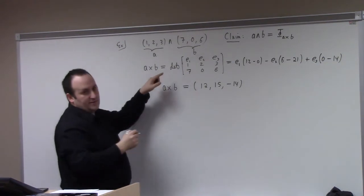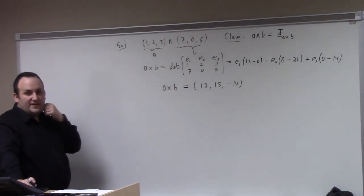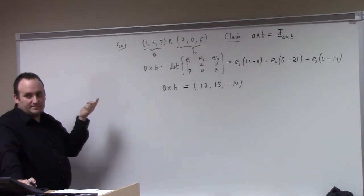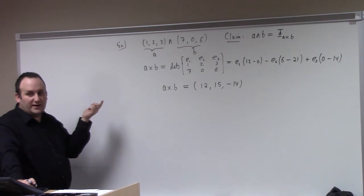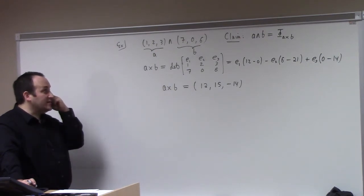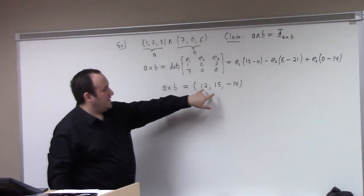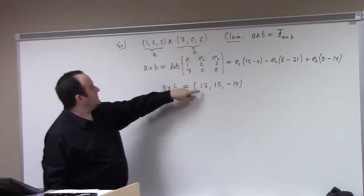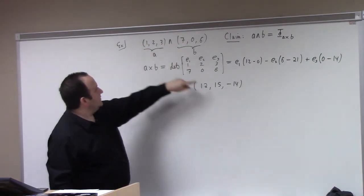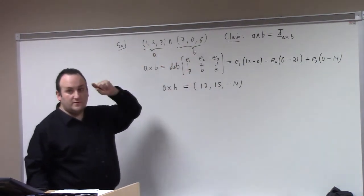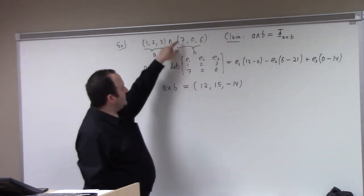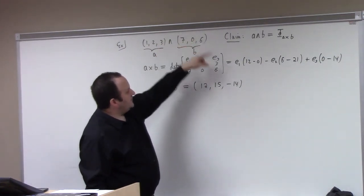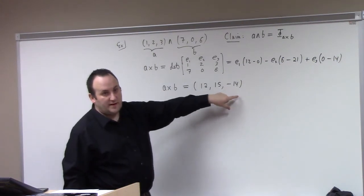As a check for Calculus 3 students, the dot product of the cross product with either original vector should be zero. We have (1,2,3) dot (12,15,minus14) = 12 plus 30 minus 42 = 0. And (7,0,6) dot (12,15,minus14) = 84 minus 84 = 0. So this is in fact perpendicular to both of them. Good.